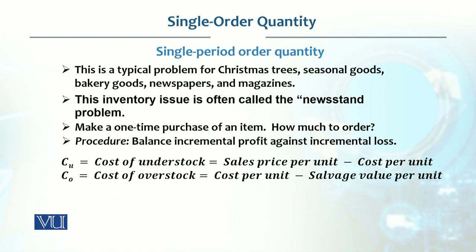That is the cost of overstock. The formula is: Cu divided by (Cu + Co), which gives us what we call the service level or critical ratio. On this basis, we calculate the optimal order quantity.